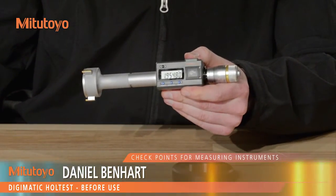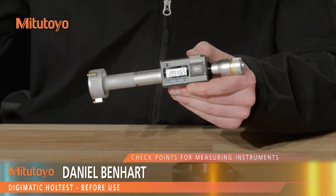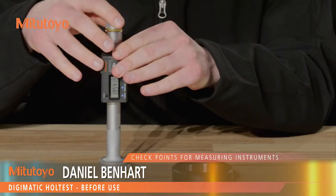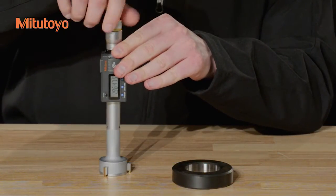Before use, clean the contacts, clearing any dirt or dust. Rotate the thimble through the full range of the gauge and check for any sticking or jamming of the thimble or anvils.